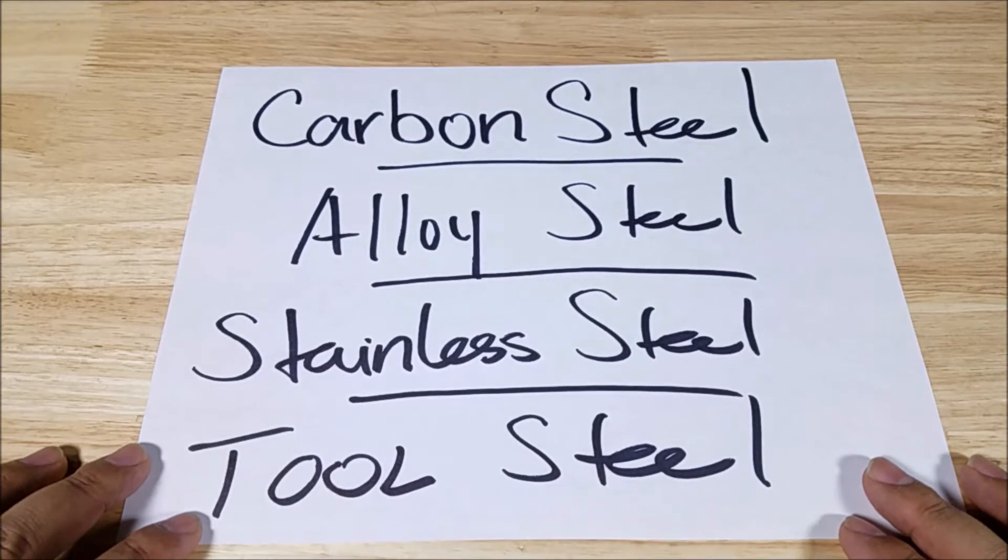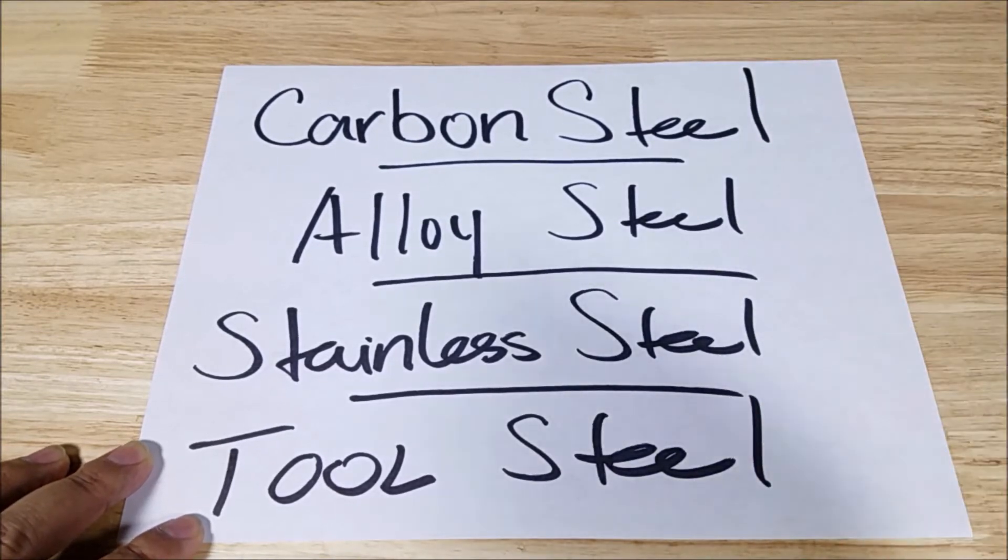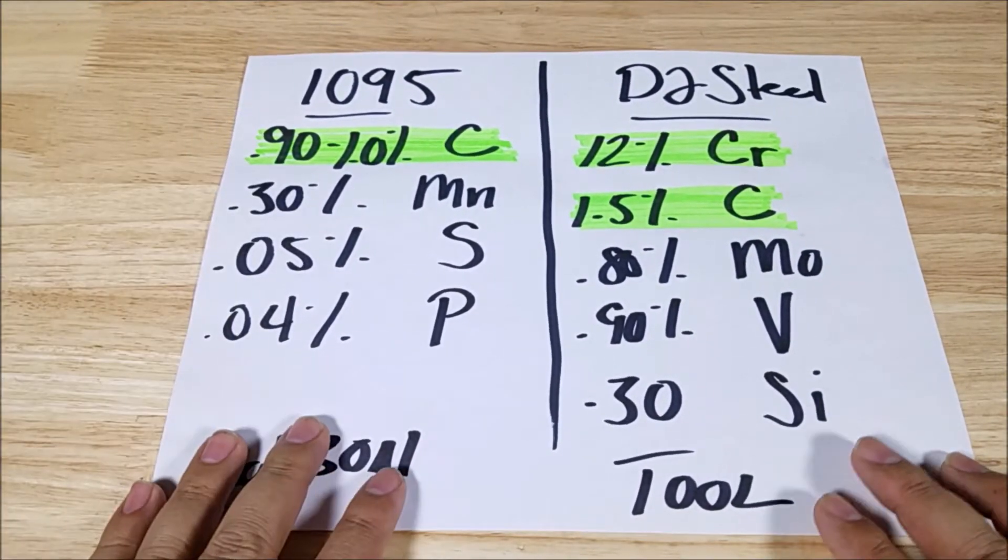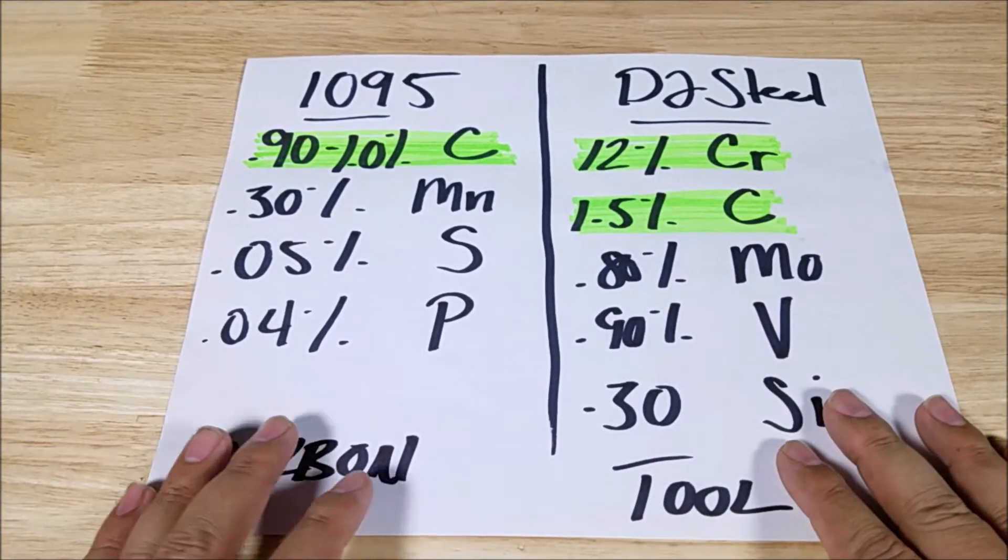Let's start off by having a look at what a carbon steel looks like and what a tool steel looks like. Alright, so here we go. We got the high carbon steel on this side, which is 1095. We've got the tool steel on the right side, which is D2 steel.